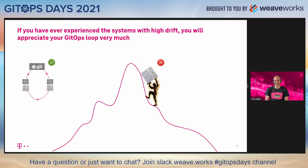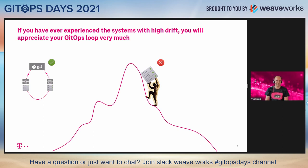That was everything I wanted to share in this short lightning talk. I hope this gives you some inspiration and ideas on how to reason about managing large-scale infrastructure with GitOps. I would certainly be happy to hear what you are all doing in this regard and whether it could help make your infrastructure more autonomous. Have a great rest of the event and enjoy your day.